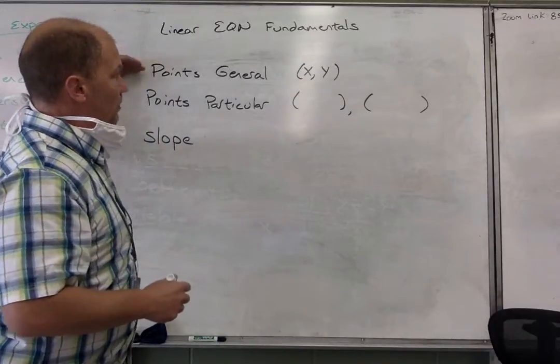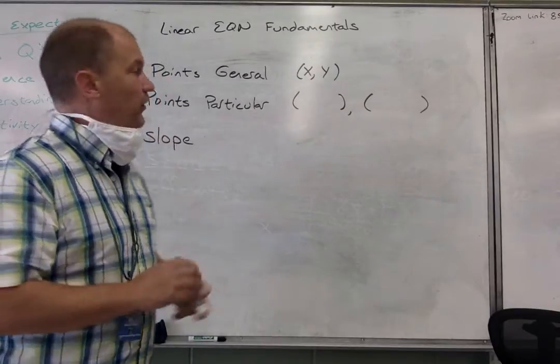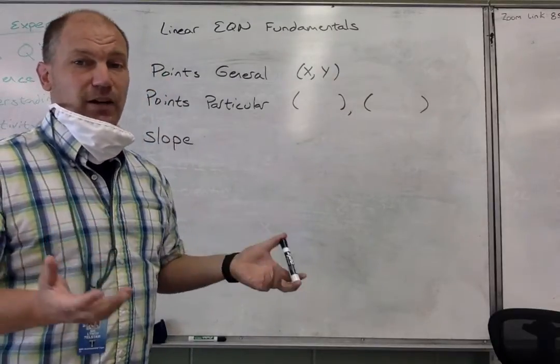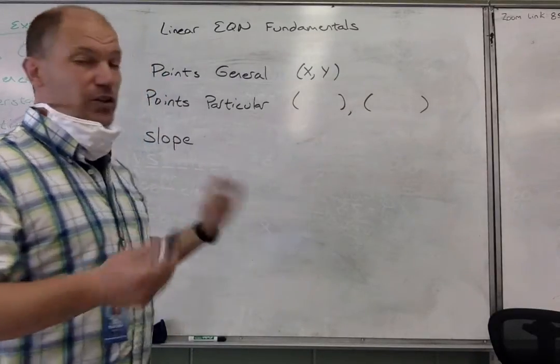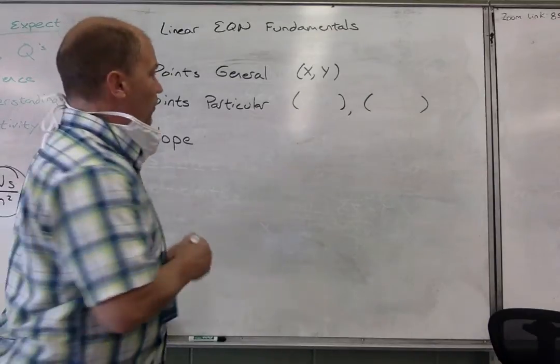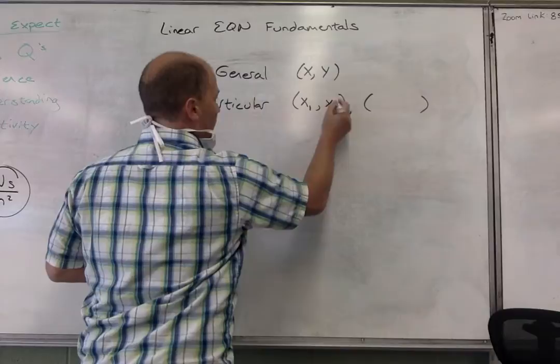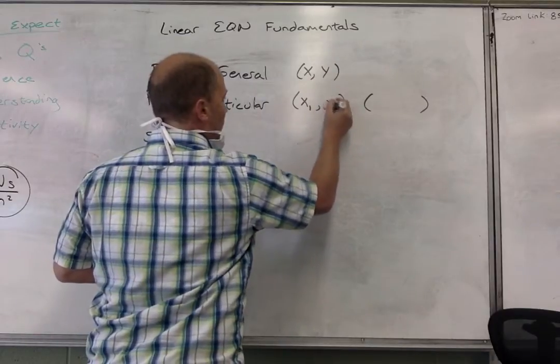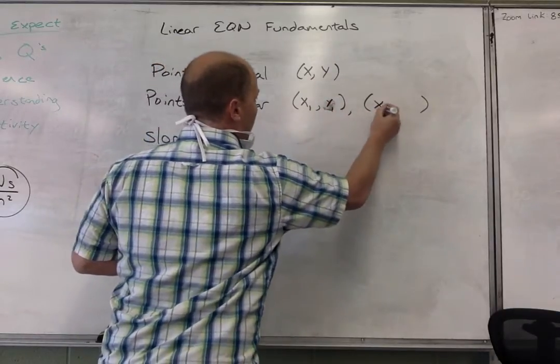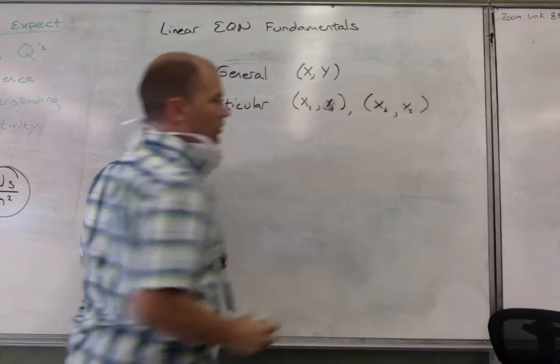When we talk about points in general, those are just x and y. Those would be the variables x and y. When we're talking about specific points, the way we label those would be x sub 1 and y sub 1, or x sub 2 and y sub 2.